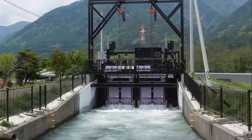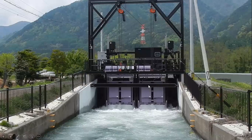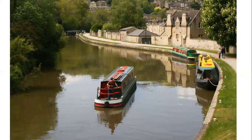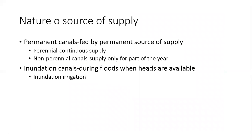Water is also supplied from the reservoir to the powerhouse for power generation, and for navigation purposes. Based on the nature of supply, there are two types of canals: permanent canals and inundation canals. Permanent canals are fed by a permanent source of supply — these include perennial and non-perennial canals. Inundation canals are fed only during floods when sufficient heads are available.